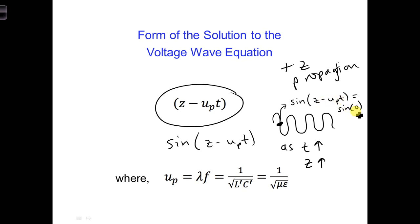In other words, as time increases, the zero crossing that we are tracking must move to the right, must move in the positive z-direction. So this means that it's a voltage wave traveling in a positive z-direction.